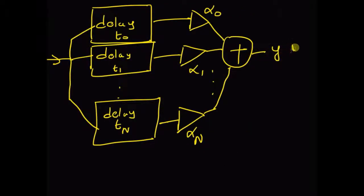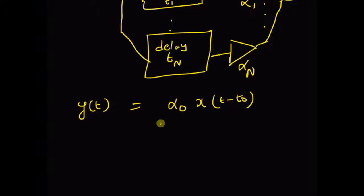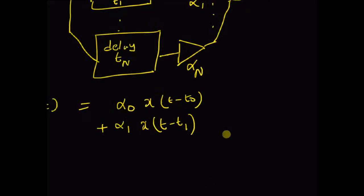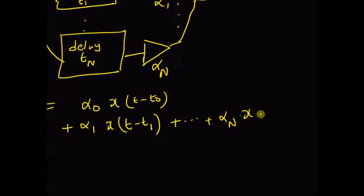The final output is y(t). For this multipath channel, the output y(t) can be written as the weighted sum: α₀ multiplied by x(t − t₀), that is the input going through the first channel with delay t₀ and attenuation α₀, then the second channel α₁ multiplied by x(t − t₁), and by repeating this process n times, we have αₙ — the component due to the nth channel.